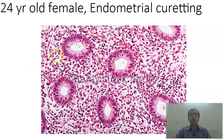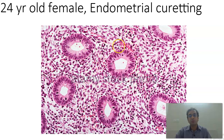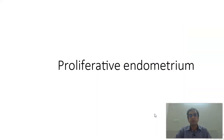Next is that of a 24-year-old female with endometrial curettings. You find that the glands are very tubular, there is mitosis within the lumen of the glands, and there is compact stroma. Mitosis is a very important feature to diagnose a proliferative endometrium.